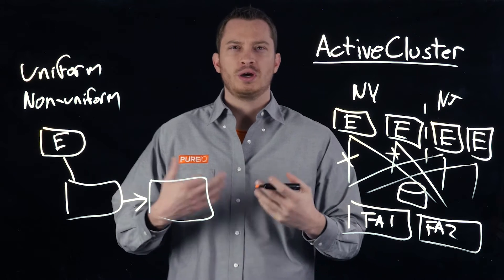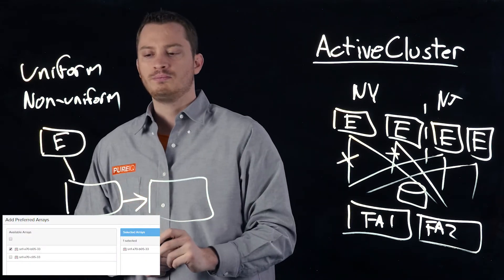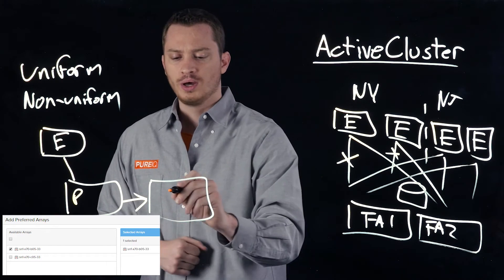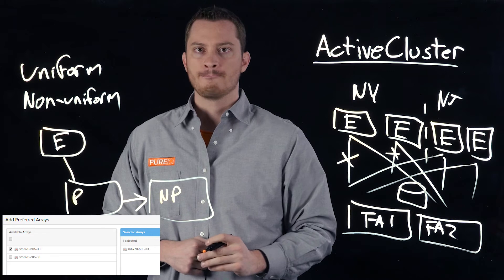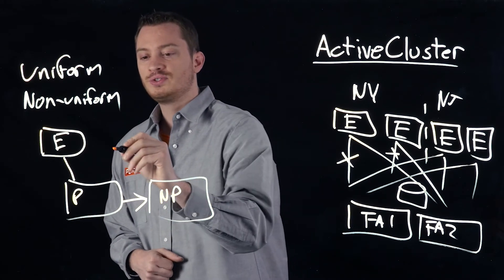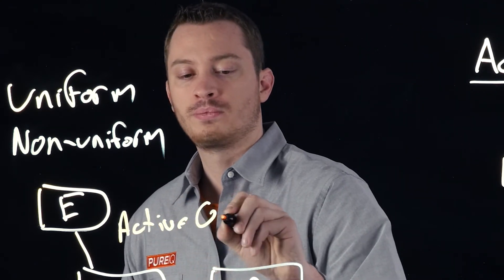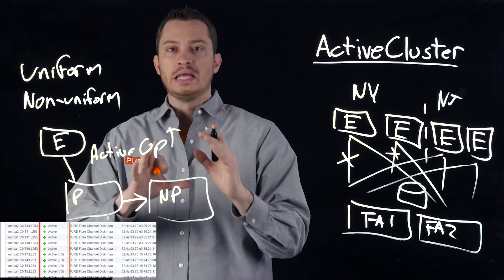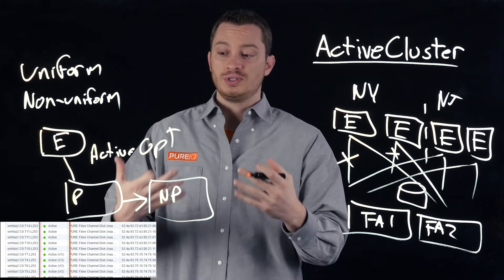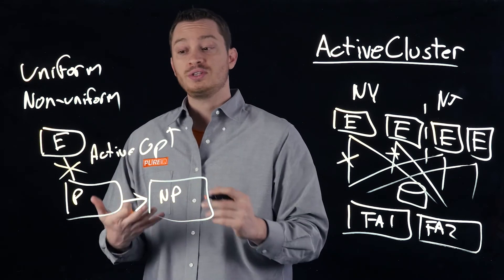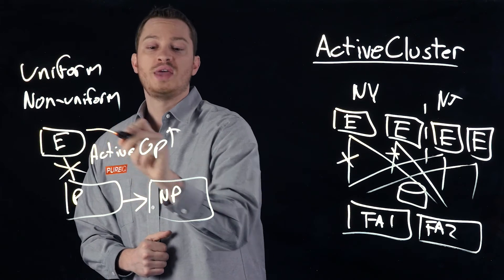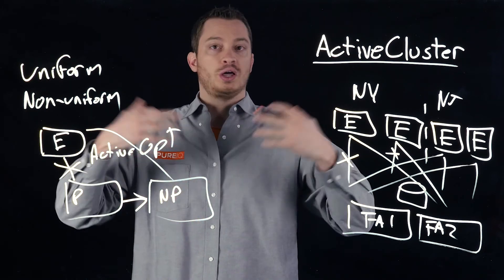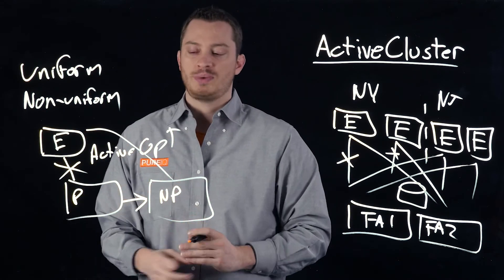To handle this, on the Flash Array we have the concept of a preferred array. The array local to a set of hosts is marked as preferred for those hosts, and the remote array is non-preferred. Inside vSphere, some paths are active optimized and some are not. vSphere will use only the active optimized paths if they're available and will not use the non-optimized paths. Only if all optimized paths go away will it write across the WAN — latency will be higher, but you have better resiliency. When the local array comes back online, IOs switch back to the optimized paths to that array.